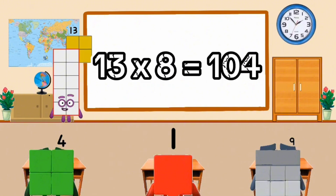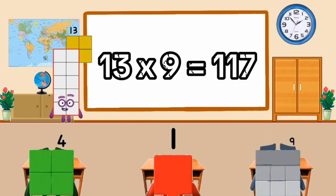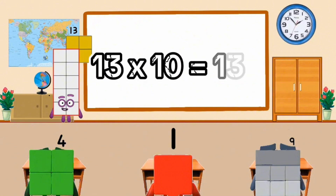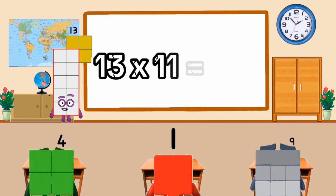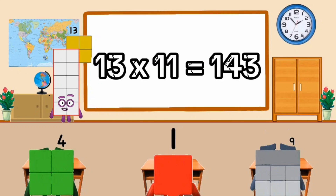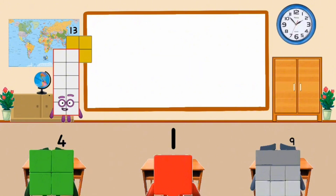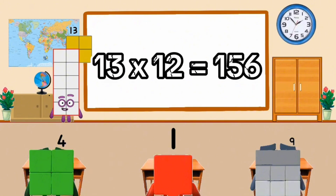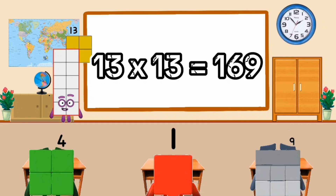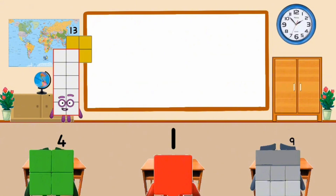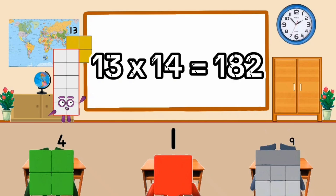13 times 8 equal 104. 13 times 9 equal 177. 13 times 10 equal 130. 13 times 11 equal 143. 13 times 12 equal 156.